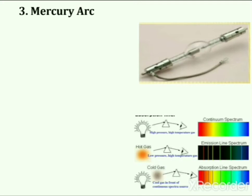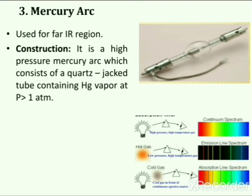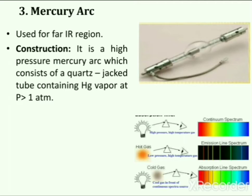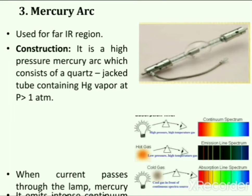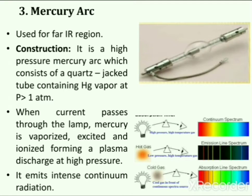The mercury arc provides radiation of the far infrared region. It is a high-pressure mercury arc which consists of a quartz jacket tube containing mercury vapor at more than one atmospheric pressure. When current passes through the lamp, mercury is vaporized, excited, and ionized, forming a plasma discharge at high pressure. In the far infrared region it emits intense continuum radiation.